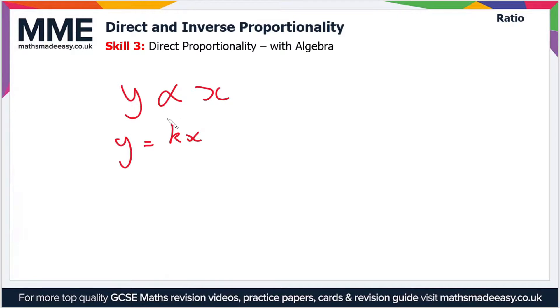This value k is known as the constant of proportionality. If you're given two values for y and x, you can work out the value of k. Then using the value of k, you can work out the value of y for any value of x, or the value of x for any value of y.